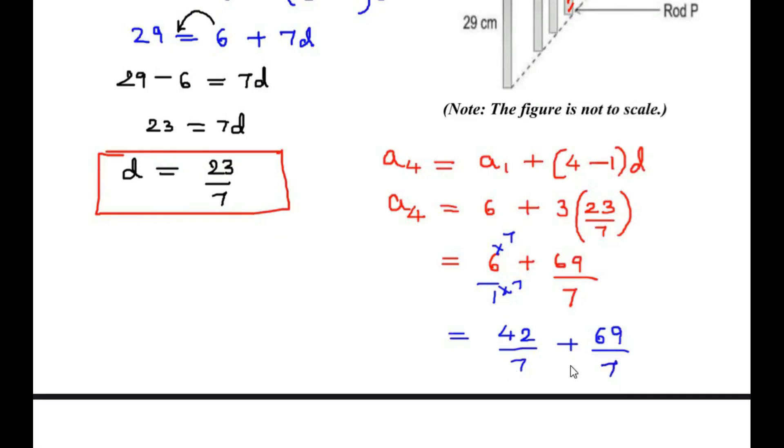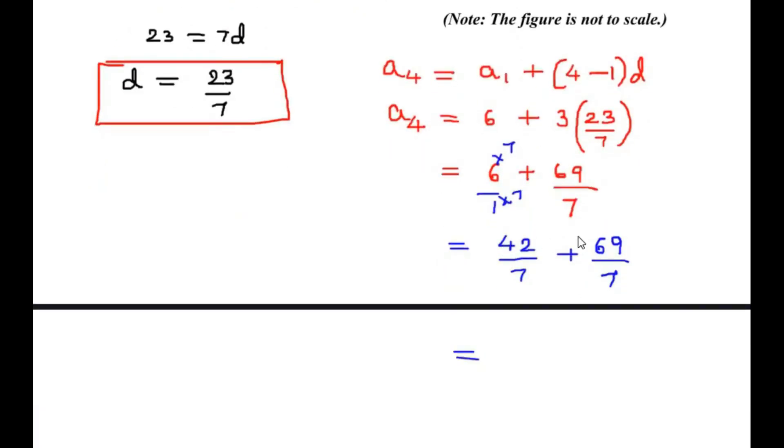So since the denominators are same, we can just simply add the numerators. So 42 plus 69 gives you 111 divided by the common denominator 7. So this is 111 over 7 cm, this is the length of the 4th rod.